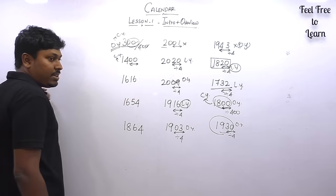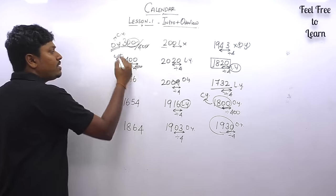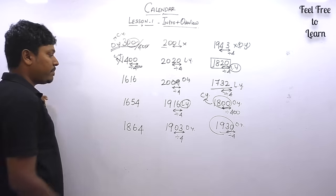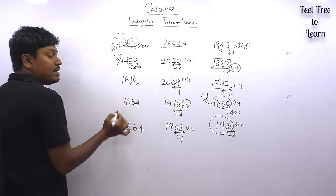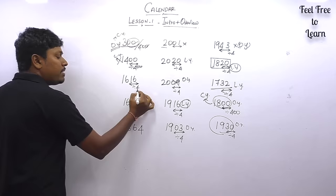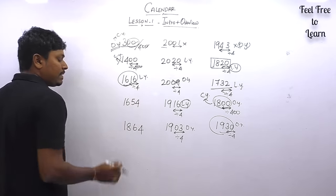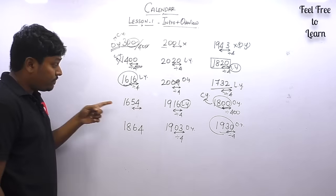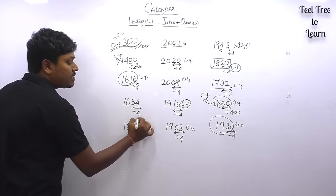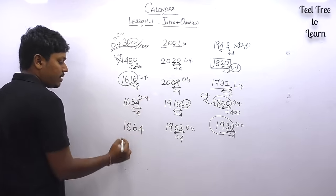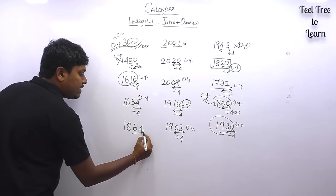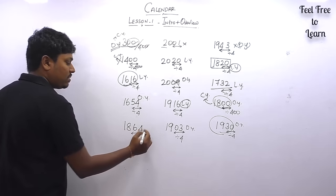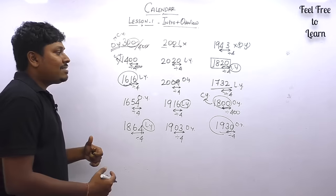For 1616: last two digits are 16, divisible by 4 — leap year. For 1654: last two digits are 54, not divisible by 4 — ordinary year. For 1864: last two digits are 64, divisible by 4 — leap year. This is the way to check whether a year is a leap year or an ordinary year.